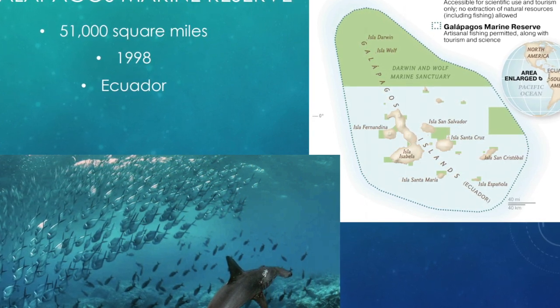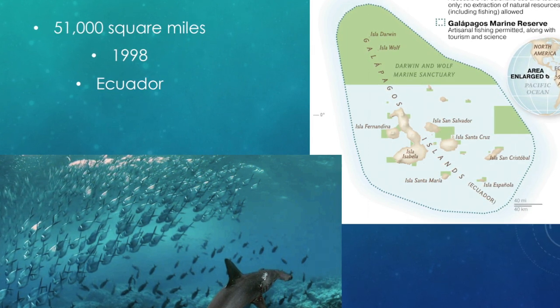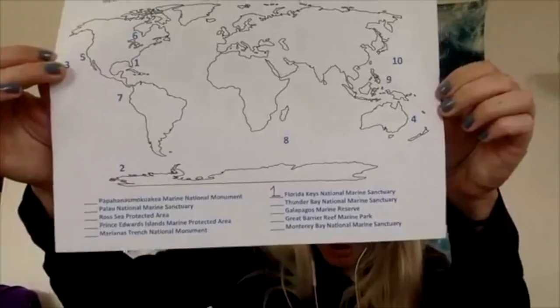Then we have the Great Barrier Reef Marine Park. The Great Barrier Reef Marine Park is 132,000 square miles, was established in 1995, and is the world's largest barrier reef. If you guys guessed Australia, you are correct — Australia is where the Great Barrier Reef Marine Park is located.